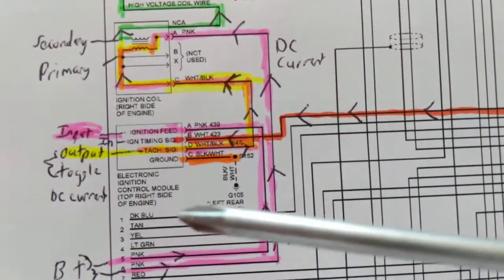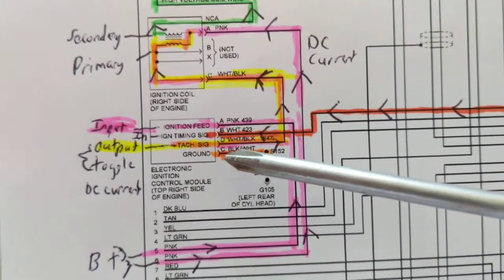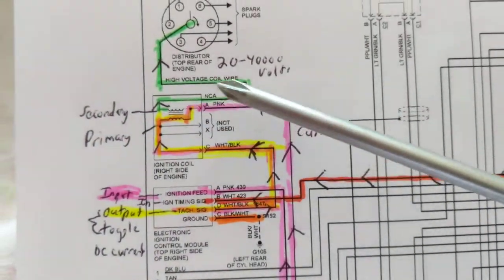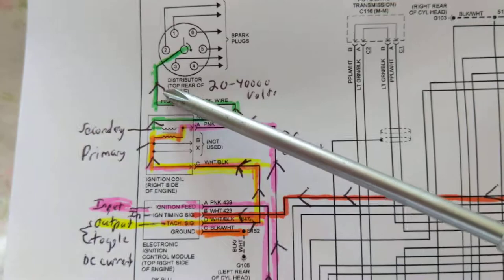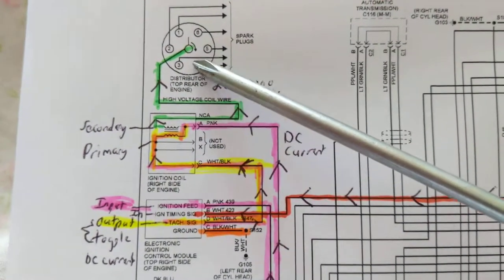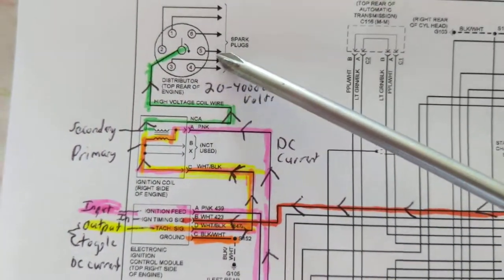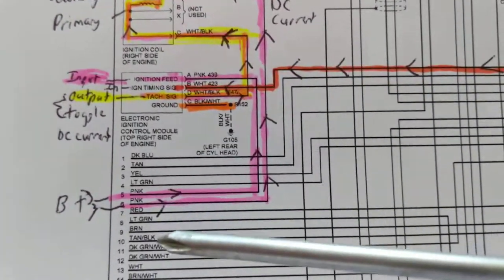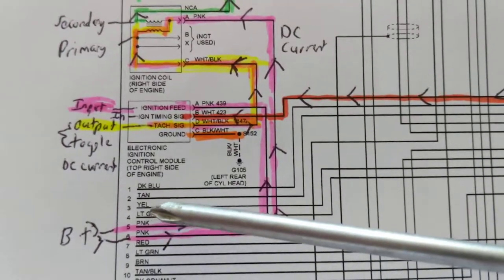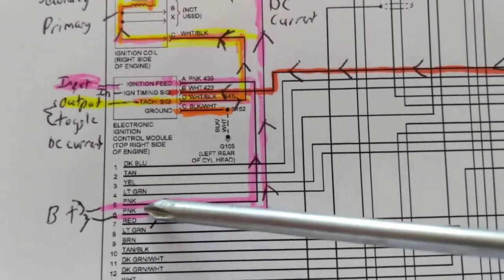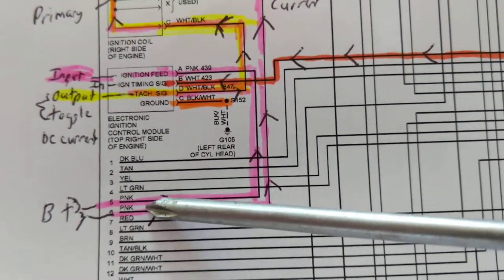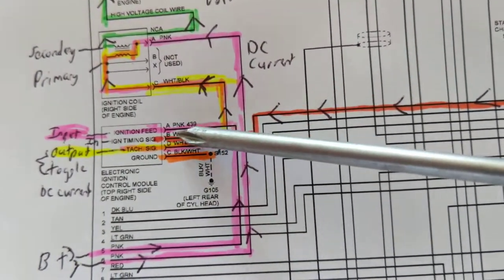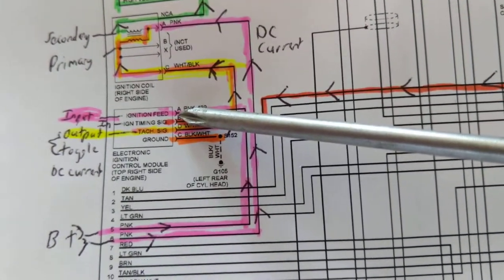Again, let's start from here, same module, same primary, I labeled it, and same secondary, same output over here going to spark plug wires and going to the spark plugs. So first we need B+, we know that the module needs B+. It goes, two lines of B+, pin 5, pin 6, in pink, ignition feed. That is the B+ coming in from a fuse from the battery.